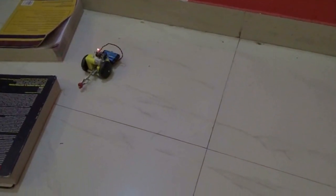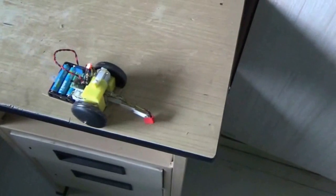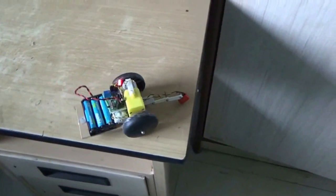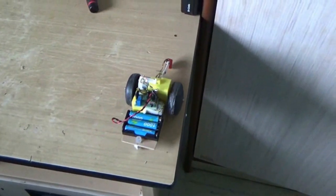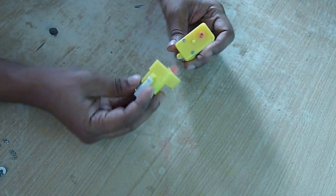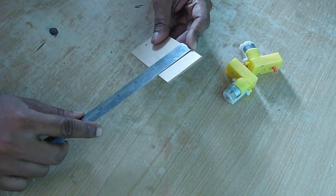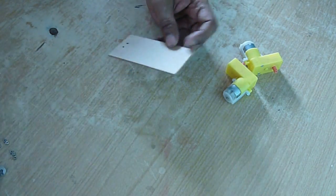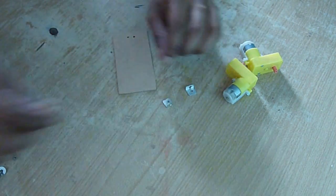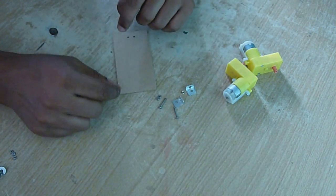Hi guys, we will make an obstacle detection robo car and an edge detection robo car. For this you need two geared DC motors which I'm going to fit on top of a five to ten centimeter cardboard using two L clamps and some screws and nuts.